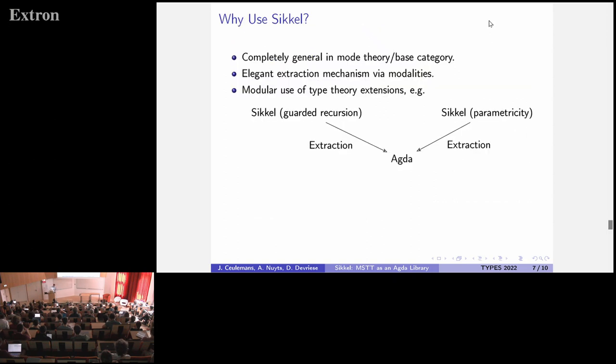Okay, so as a summary, what's the benefits of using SICKL? So, first, it's completely general in the mode theory. We also illustrate that in the full paper with another application involving a restricted form of parametricity. It has this extraction mechanism using modalities, which I already talked about. And then it has this certain modular use of type theory extensions. So, basically, the syntax is just an inductive type parametrized by a mode theory. So, if at one point in your Agda development you want to use guarded recursion to write a function, you can just instantiate SICKL with a mode theory for guarded recursion, write the function, extract it to an ordinary Agda function. And if at another point you want to use parametricity, you can instantiate SICKL with a mode theory for parametricity, extract it to an ordinary Agda function, and keep on working in ordinary Agda.